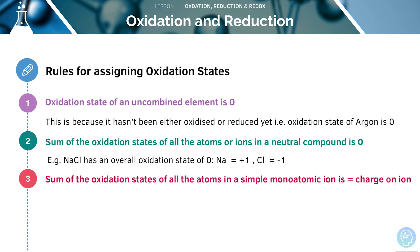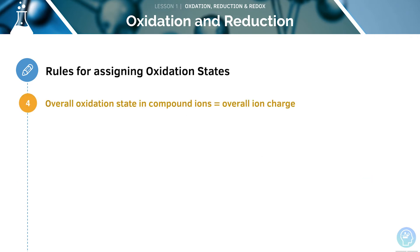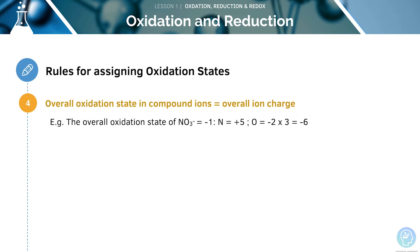Next, the sum of the oxidation states of all the atoms in a simple monatomic ion is equal to the charge on the ion — for example, the K⁺ ion has an oxidation state of +1. The overall oxidation state in a compound ion is the overall ion charge — for example, the overall oxidation state of NO₃⁻ is −1; this is the nitrate ion.